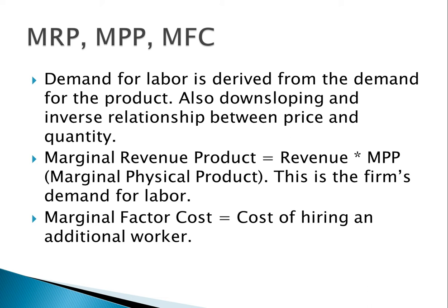Marginal revenue product is the firm's demand for labor, and it measures the worker's contribution to the firm. It is equal to the marginal revenue times the marginal physical product — the additional product a worker brings to the firm. Basically, a worker brings in this much additional product, so you multiply by the revenue to find out how much additional revenue he brings in, and that's used to calculate how many workers to hire. Marginal factor cost is the additional cost of hiring an additional worker, and these two combine to determine how many workers a firm will hire to maximize output.